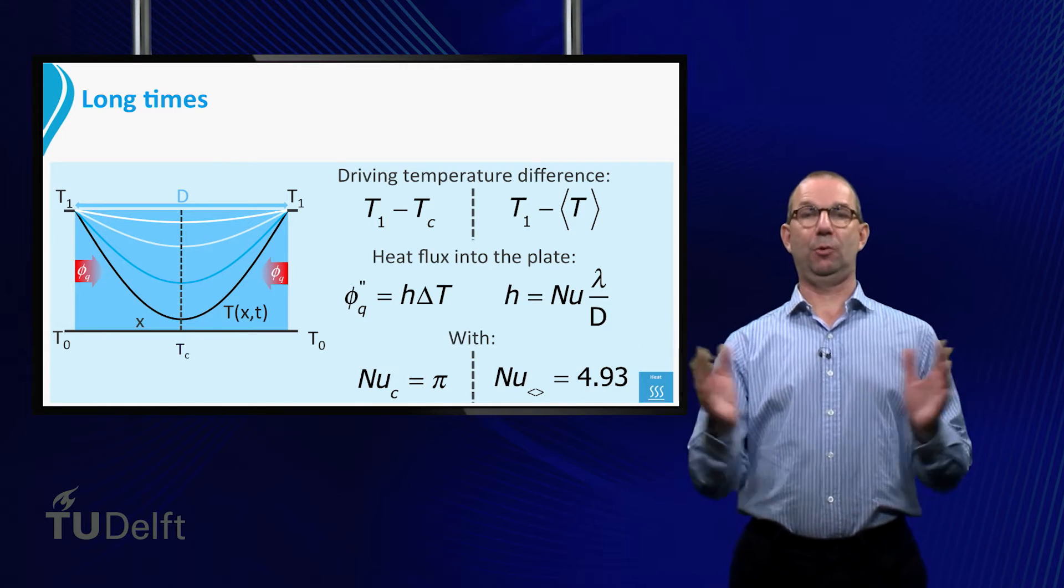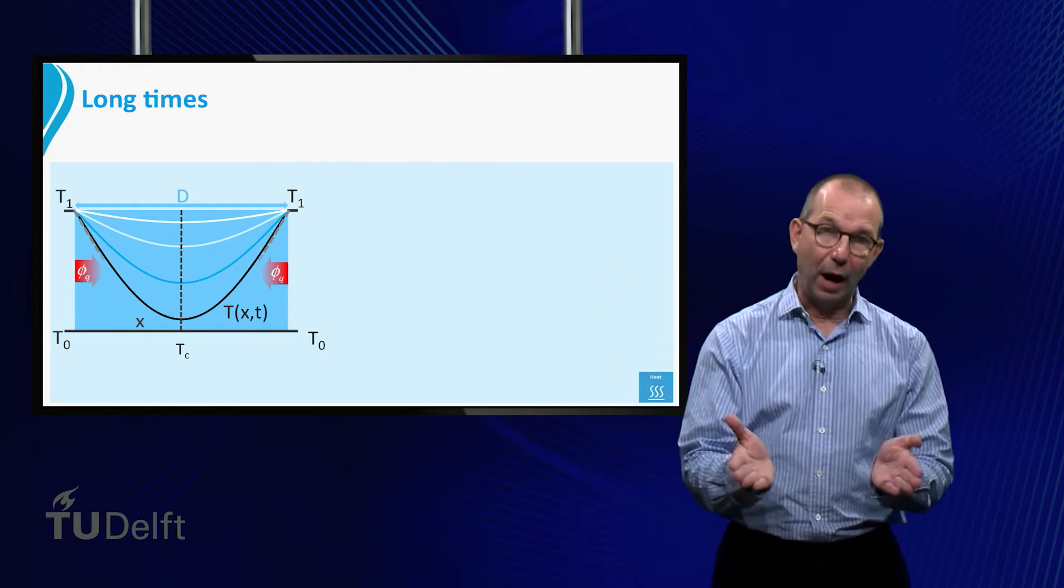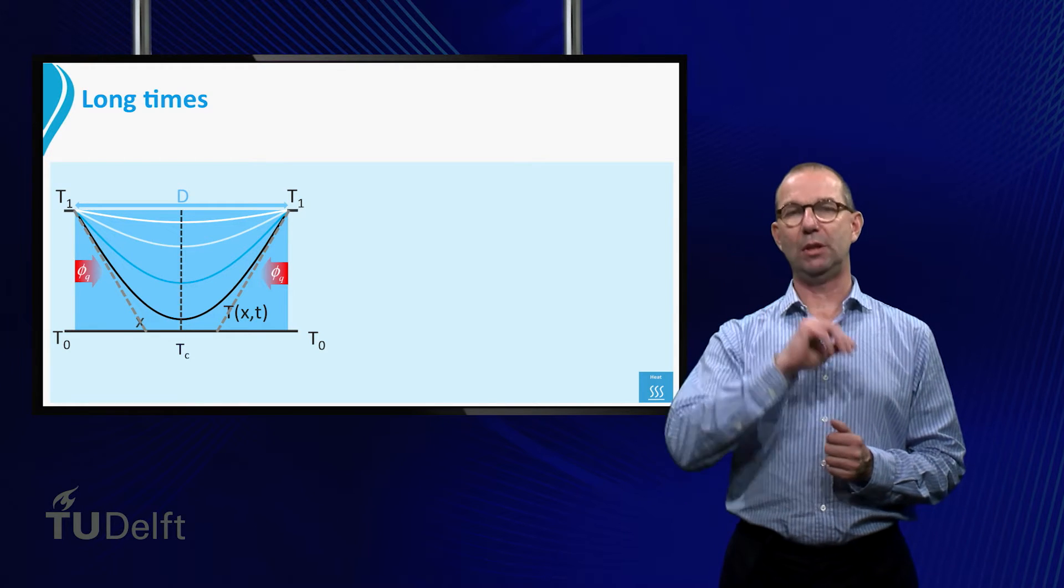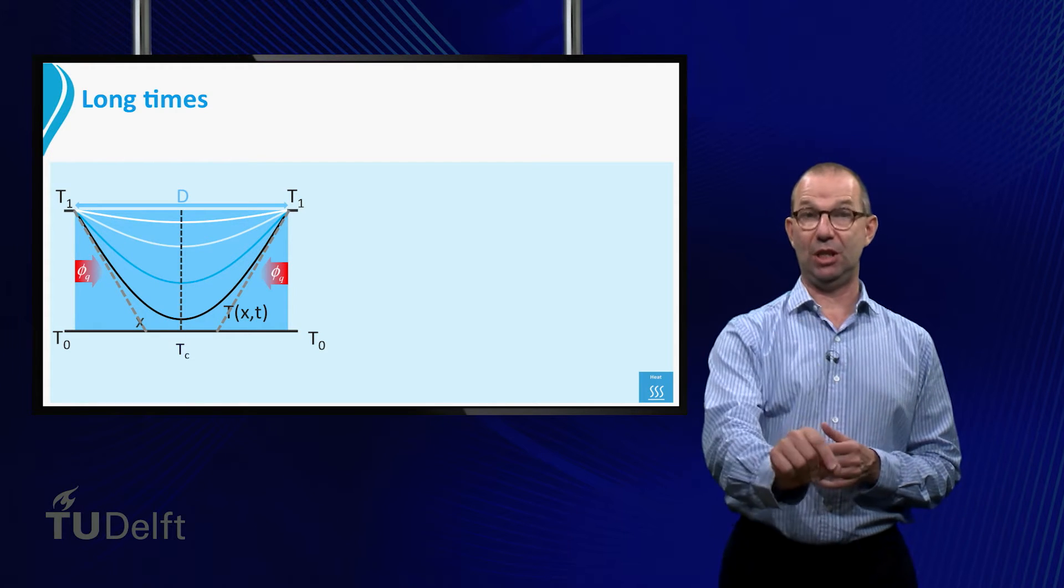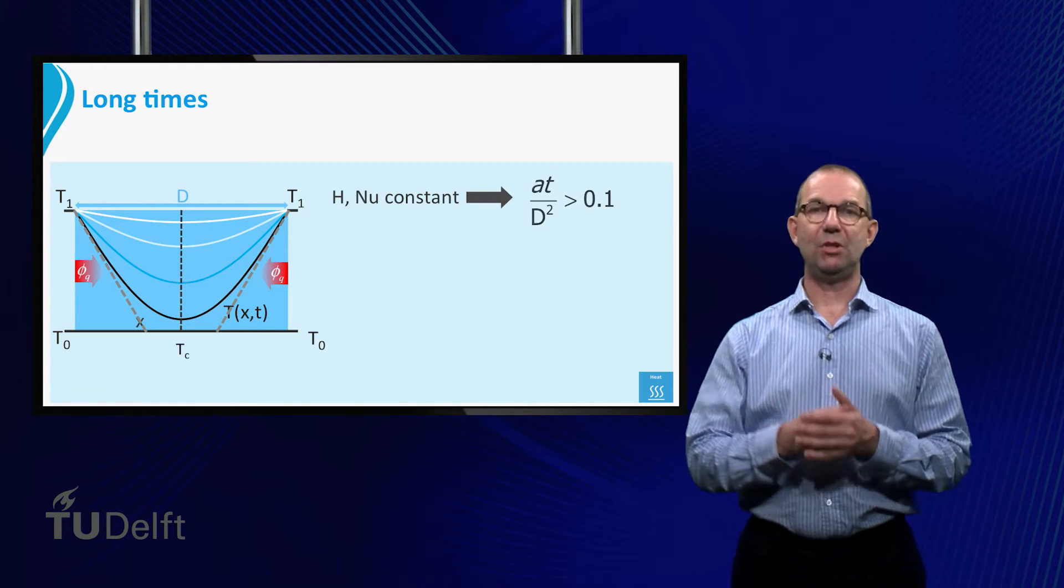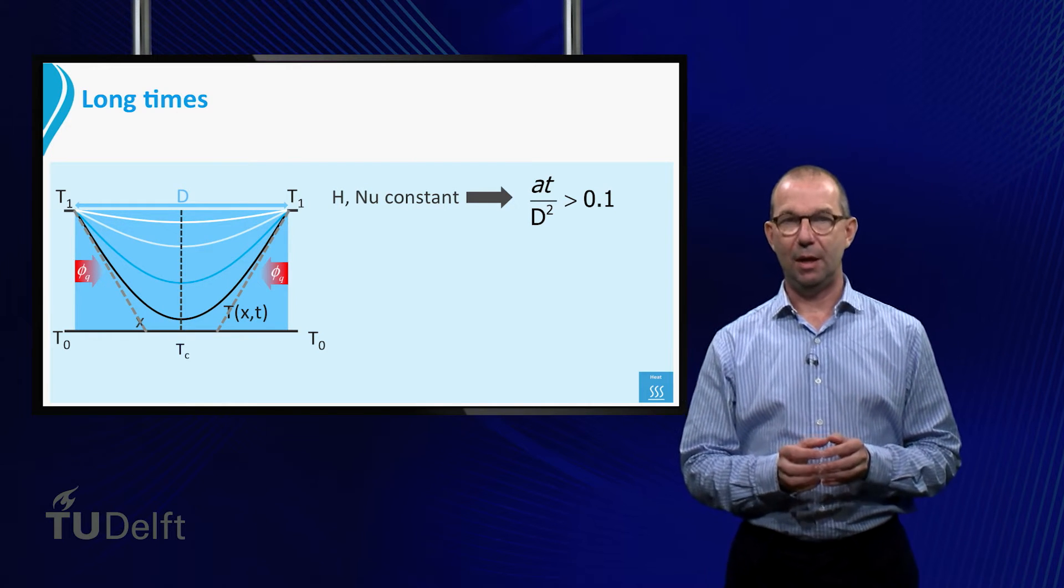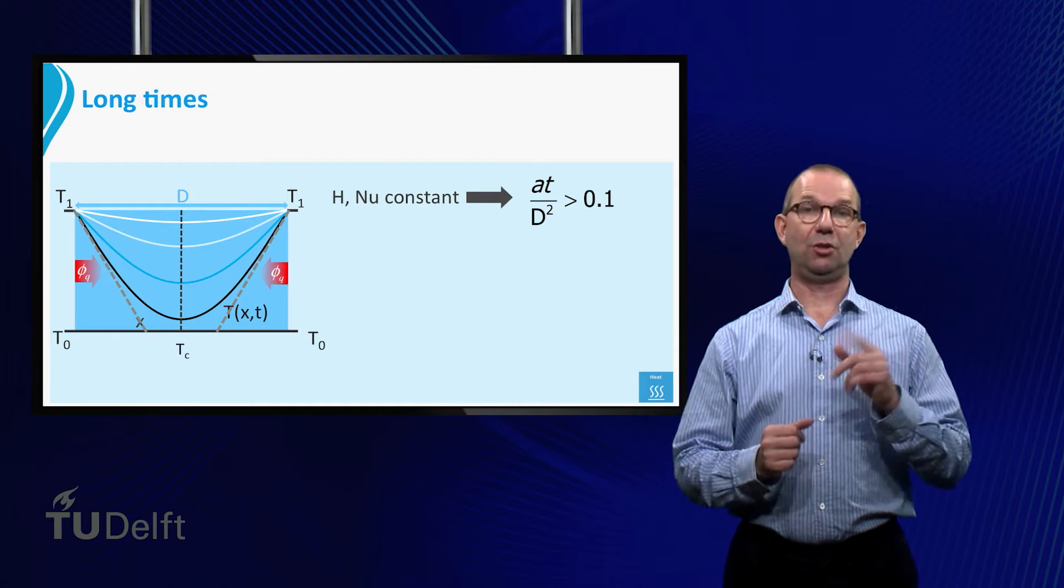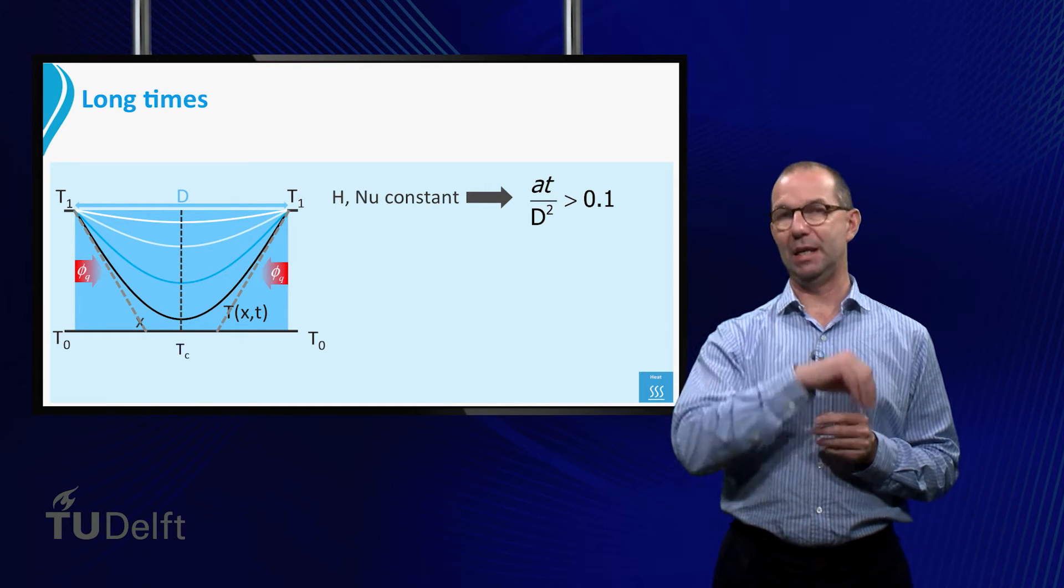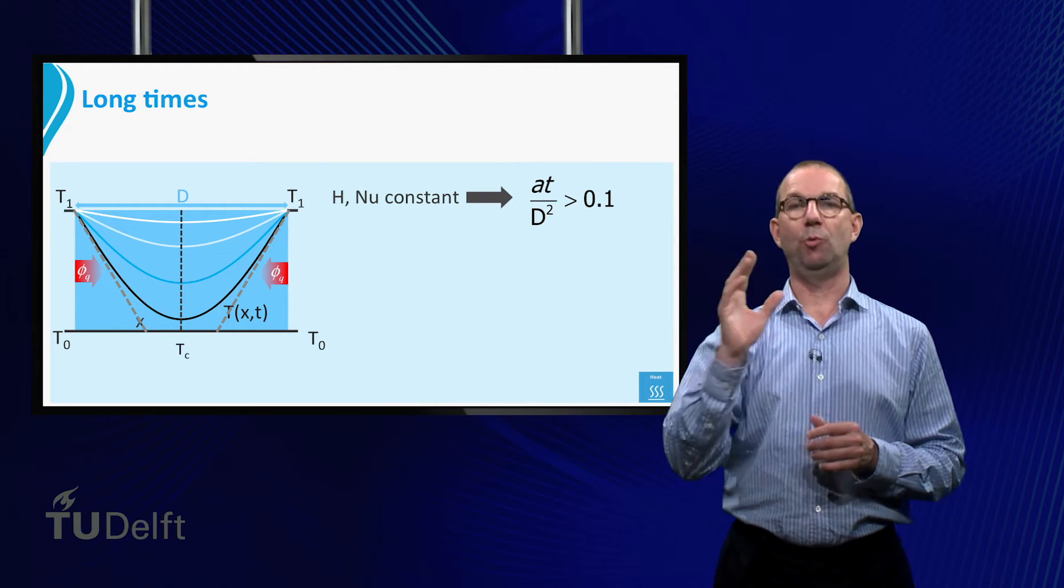When can we apply this theory? When we look at the slope of the temperature profiles, we see that both are quite far into the plate. More importantly, the original temperature T0 is no longer present in the plate. This happened at what is called long times. We thought that then both H and Nusselt were constant. This is true whenever the Fourier number is larger than 0.1.